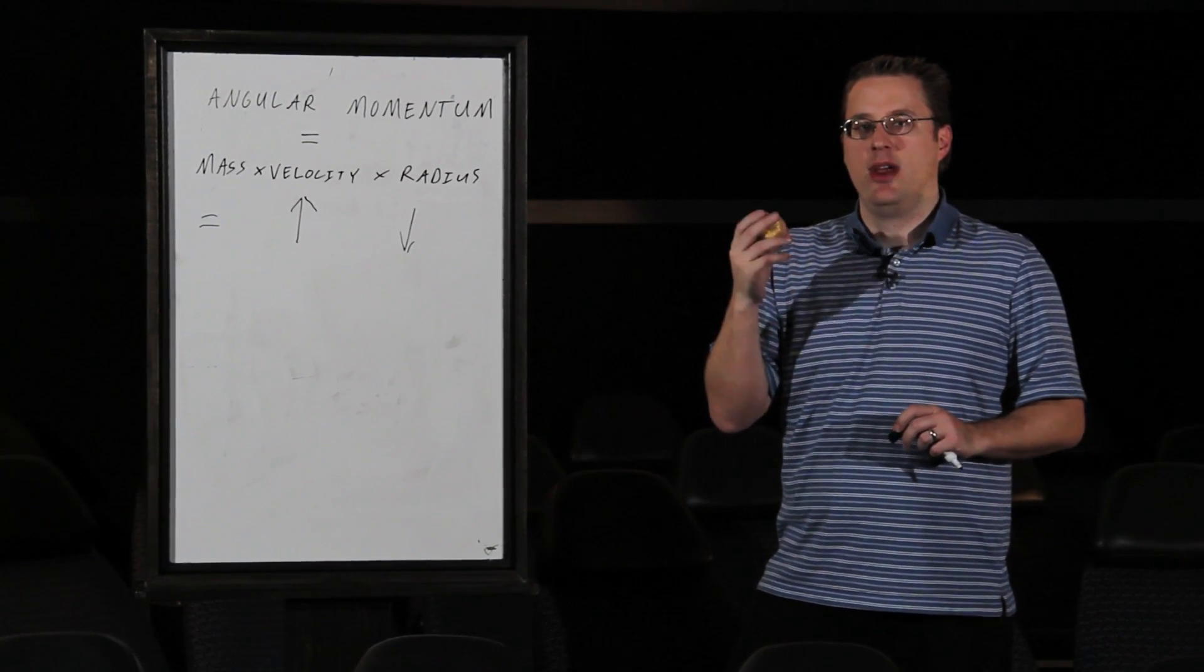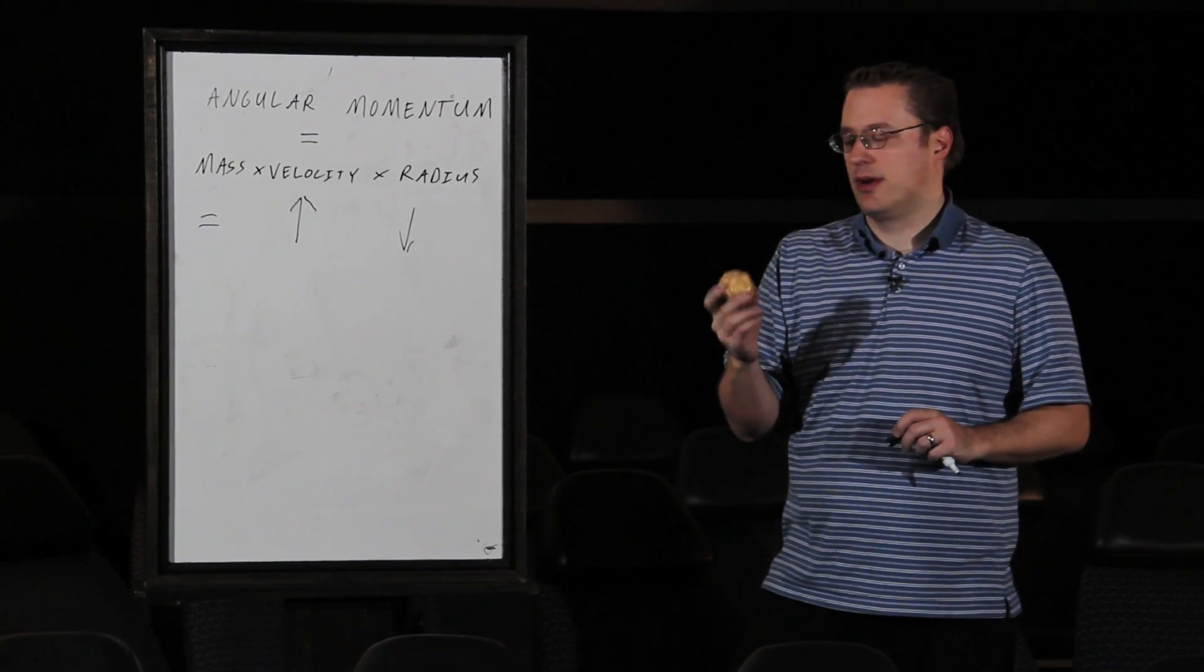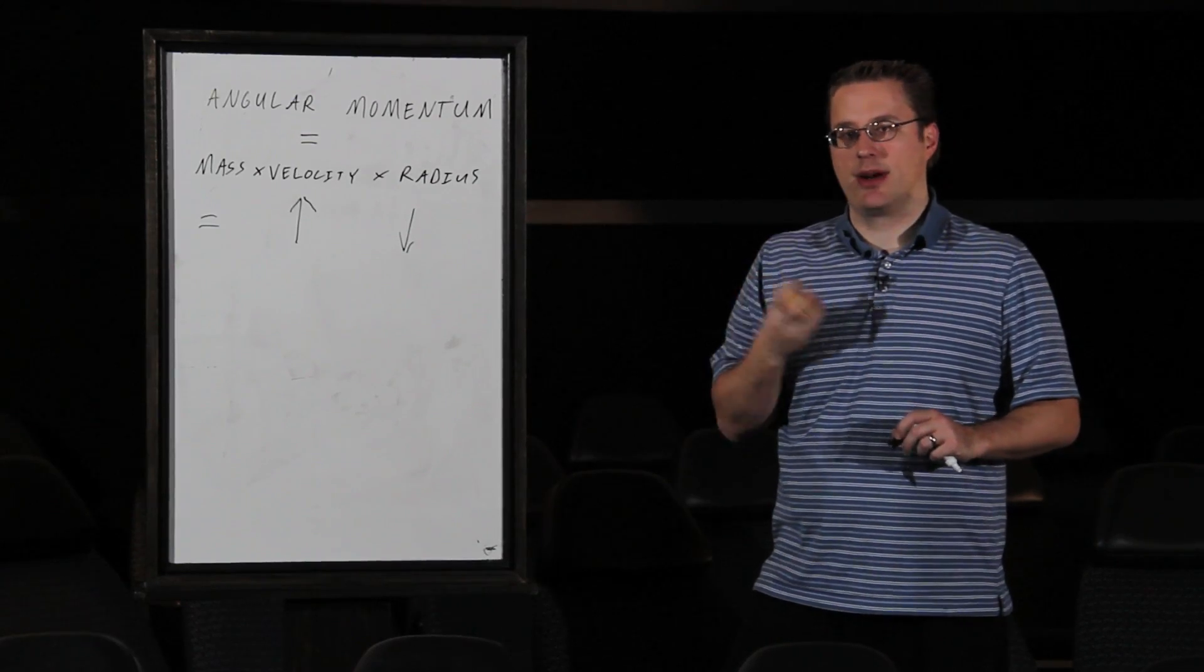The other gas giants also have quicker days than Earth. Saturn has the second quickest day, and then Uranus and Neptune a little farther out. They're a little smaller, but they're all spinning much quicker than Earth.